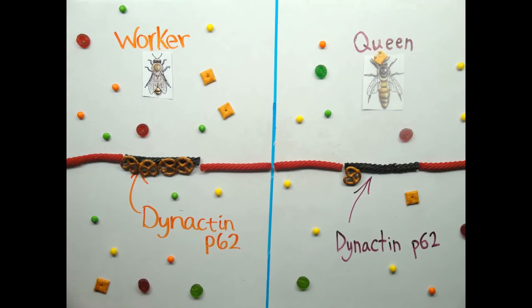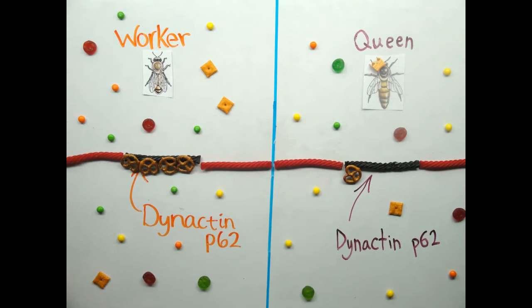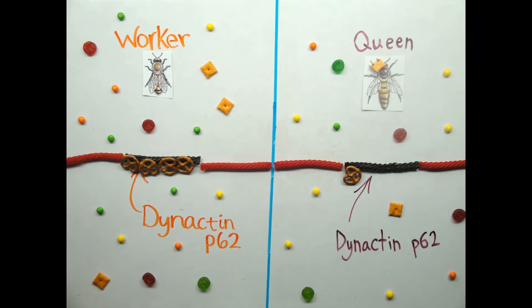In worker bees, the gene has many methyl groups. In contrast, the queen bees have no or few methyl groups.